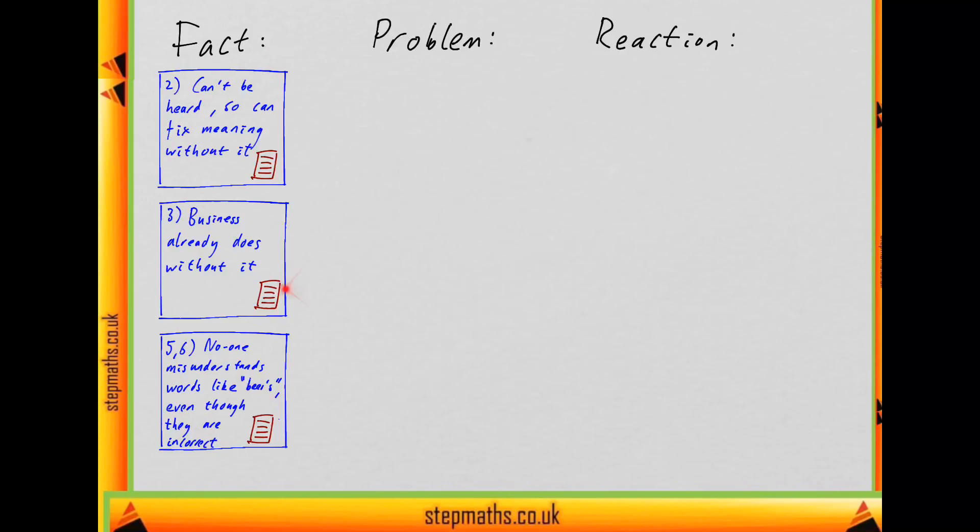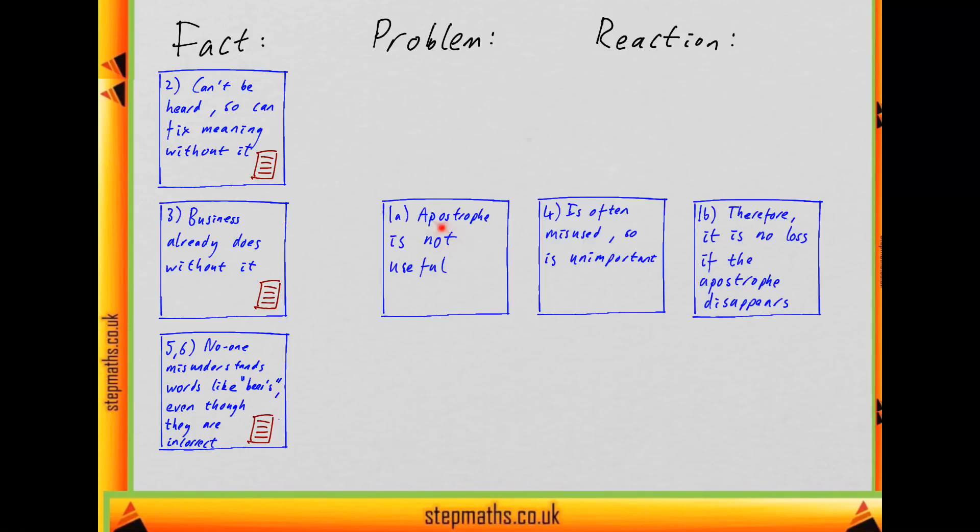The facts we've already marked out. What could the conclusion be? There are various other things the writer says that aren't facts. They say the apostrophe is not useful. It's often misused, so it's unimportant. And it's no loss if it disappears.